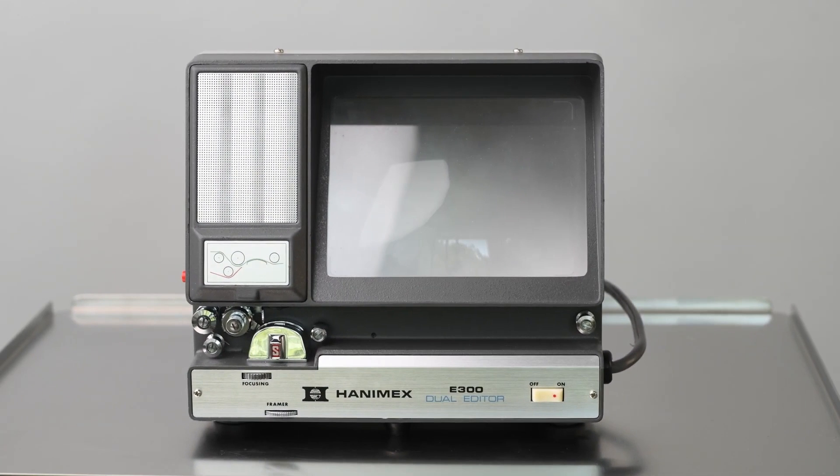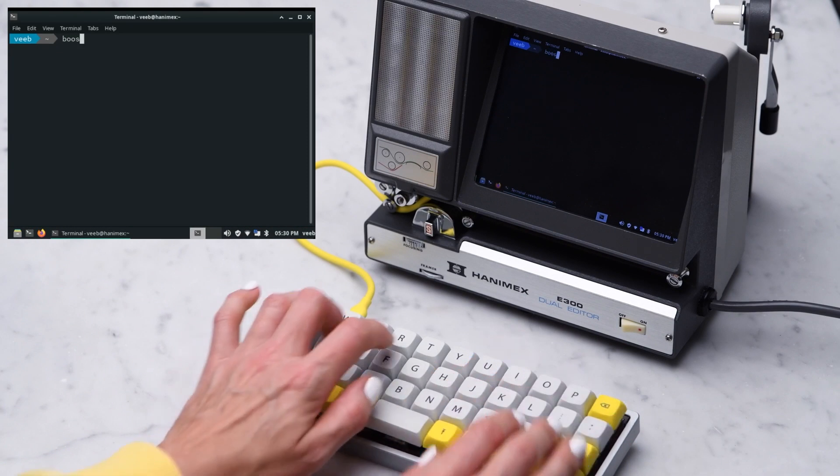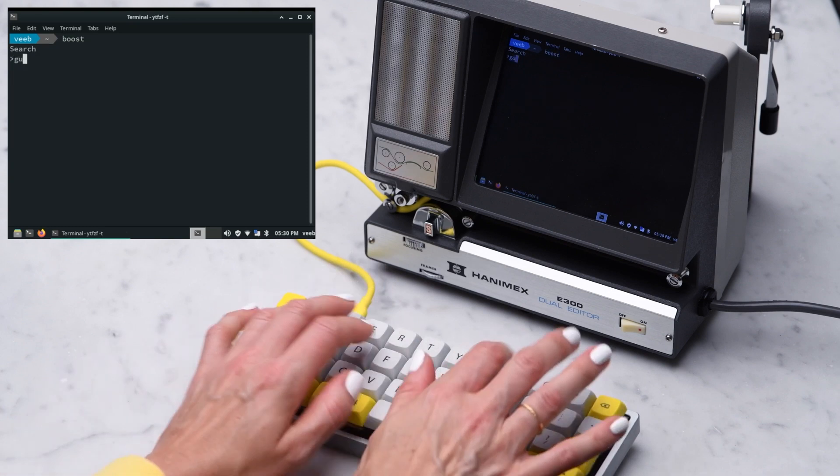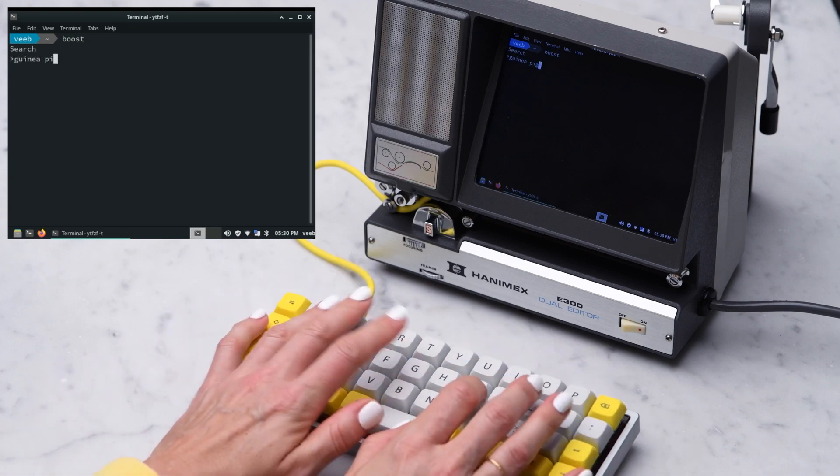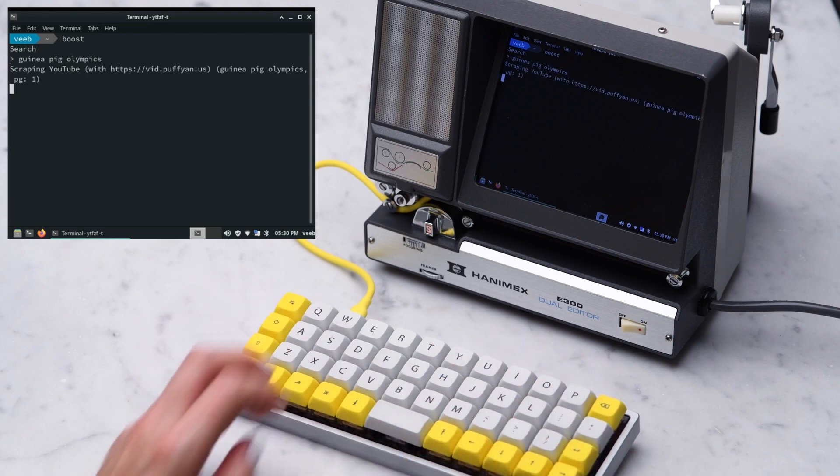More projects on YouTube. Veeb Projects shows how they retrofitted this beautiful old 8mm film editing machine with a Raspberry Pi. They swapped out the old projection screen with an LCD that just perfectly seems to fit the same dimensions. A new speaker was added behind that perforated aluminum and a yellow USB cable snakes out from the inside to connect to a keyboard.